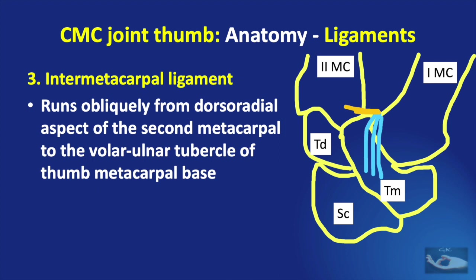The inter-metacarpal ligament runs obliquely from the dorsoradial aspect of the second metacarpal to the volar-ulnar tubercle of the thumb metacarpal base. The primary function of this ligament is to restrict radial translation of the first metacarpal bone.